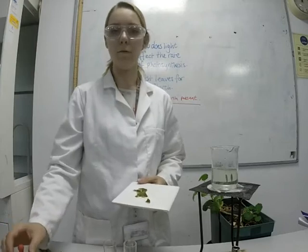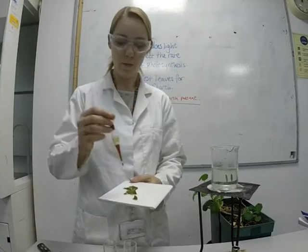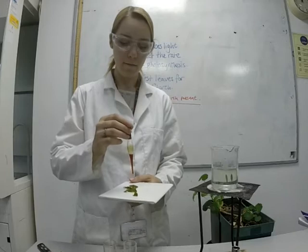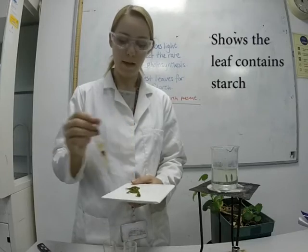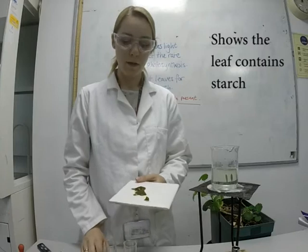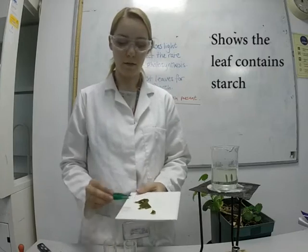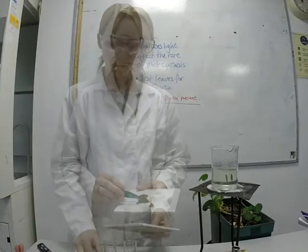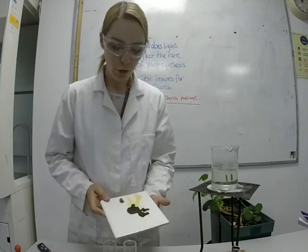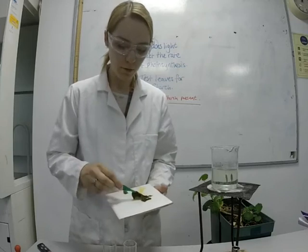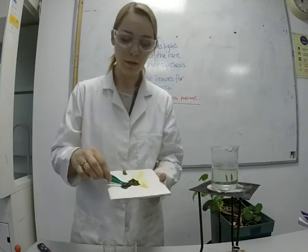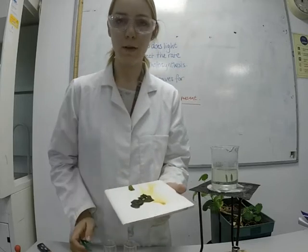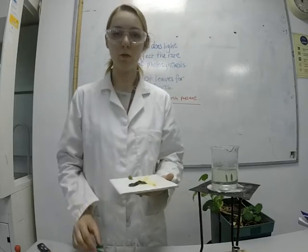Add three to four drops of iodine onto your leaf. If it turns blue-black, then starch is present. After about a minute, you will see that this leaf has turned black, showing that starch is present. As a result of photosynthesis, starch has been made.